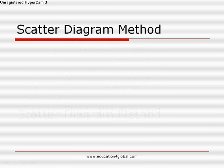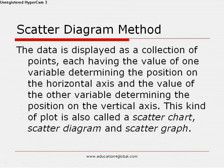The scatter diagram method is also called the graphical method. Any dotted diagram is called a scatter diagram. Here the data is displayed as a collection of points, each having the value of one variable determining the position on the horizontal axis and the value of the other variable determining the position on the vertical axis. This kind of plot is also called a scatter diagram or scatter chart.